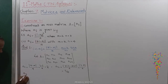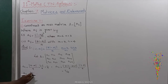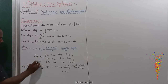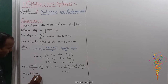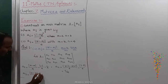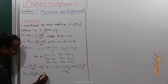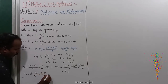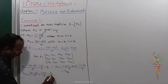Next, A13 equals the modulus of 3 times 1 minus 4 times 3, divided by 4. That is modulus of 3 minus 12, which is modulus of minus 9, divided by 4. So A13 equals 9 by 4.